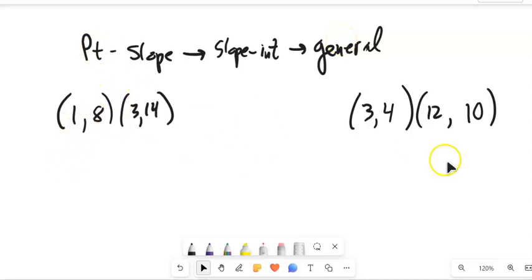Remember point-slope form is y minus the y part equals the slope times x minus the x part. Slope-intercept form is y equals slope times x plus the intercept. And general is ax plus by equals c.